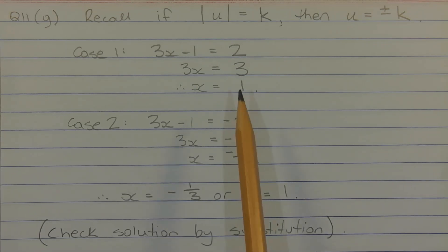Combining the answers from case one and case two, we get x equals negative 1 over 3 or x equals 1. Don't forget to check solution by substitution, time permitting.